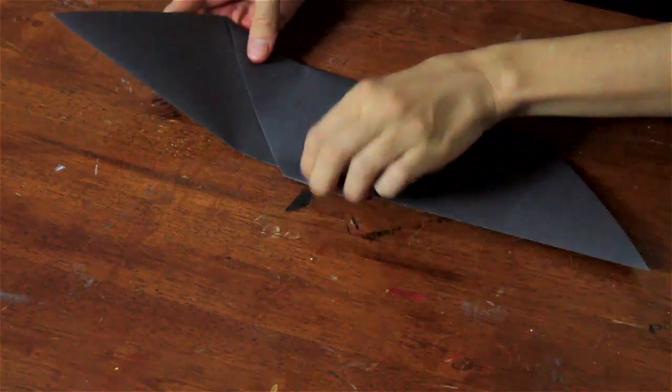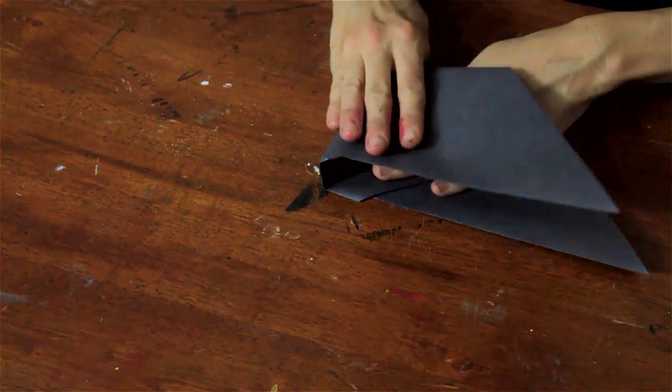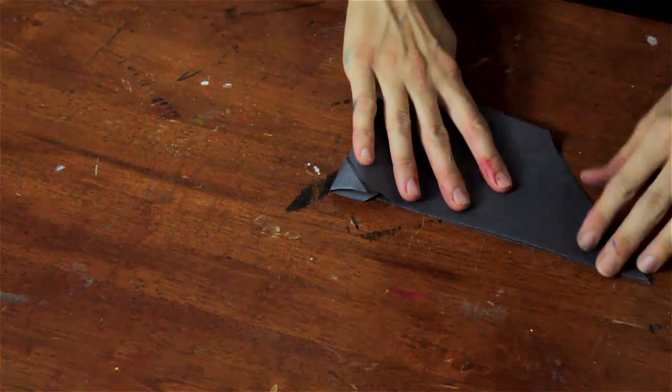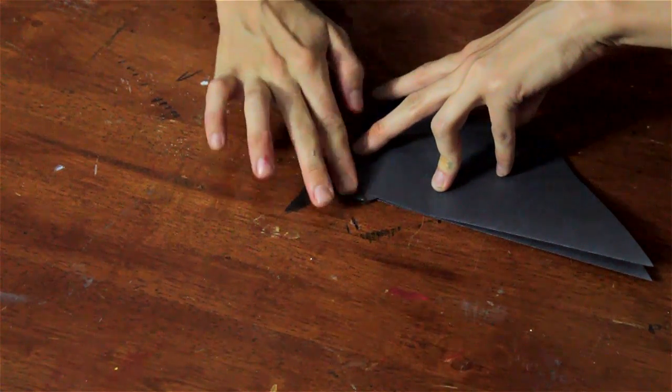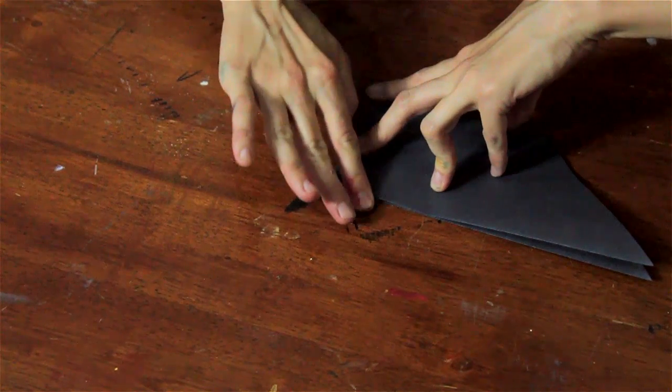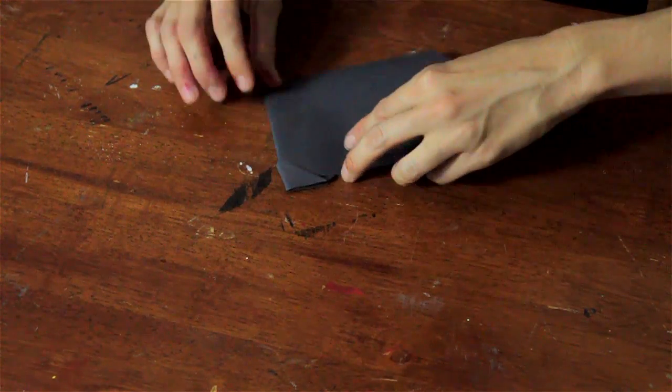Actually next you're going to flip it over, and then you're going to fold it in half. And you should still see that little triangle that you folded down. That's the side that you should be on.